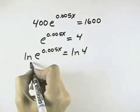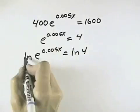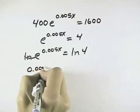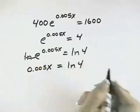When I do, the base of the natural log being e and the base of the exponent being e cancel each other as inverse operations, leaving 0.005x. That will equal the natural log of 4.